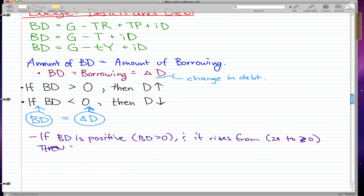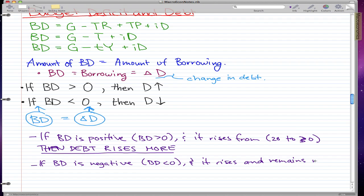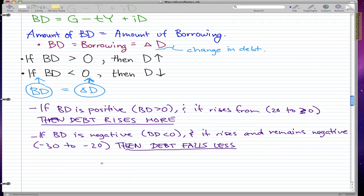can say that debt rises more. This is the fact: debt rises more. Now, if BD is negative—that is, BD is less than zero—and it rises and remains negative, for example from negative 32 to negative 20, then in this case, debt falls less. These are just facts that you've got to remember.